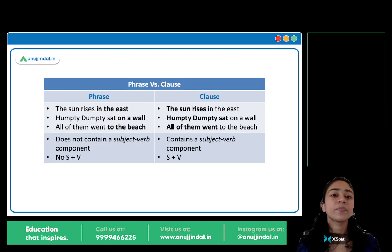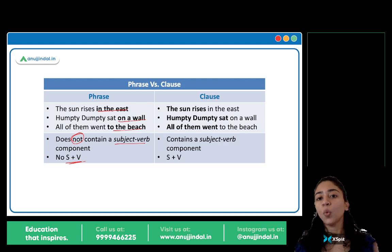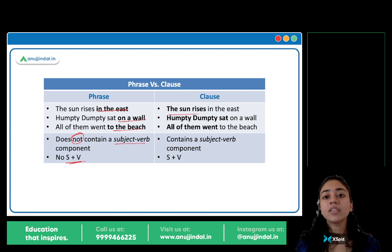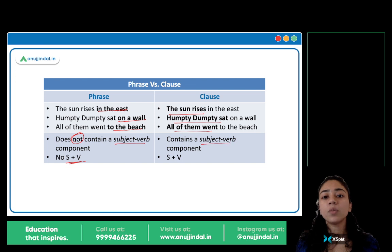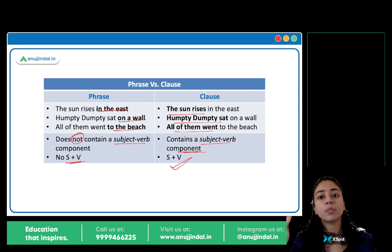Let's summarize phrase versus clause. 'In the east,' 'on a wall,' 'to the beach' — these are your phrases. Phrases do not contain a subject-verb component — no subject, no verb. Clause: 'The sun rises,' 'Humpty Dumpty sat,' 'All of them went' — contains a subject-verb component. So: phrase = no subject + verb; clause = subject + verb.